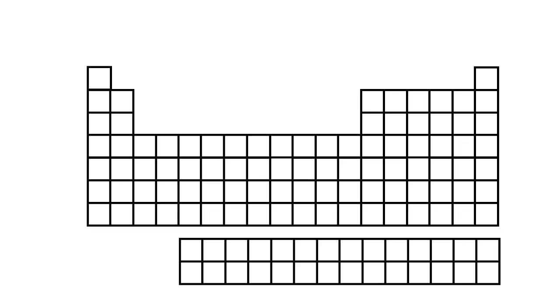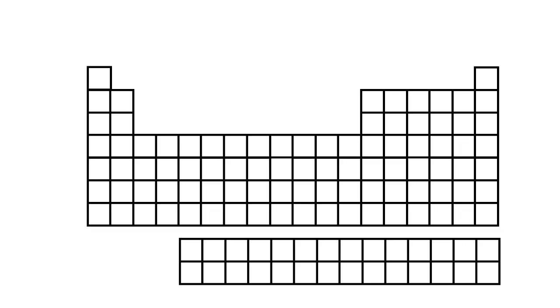So what does this look like on the periodic table? Remember when we said that atomic radius tends to decrease going from an alkali metal to a noble gas? That's the same as going from left to right across a period of the periodic table. Therefore, atomic radius tends to decrease as you go from left to right across a period.